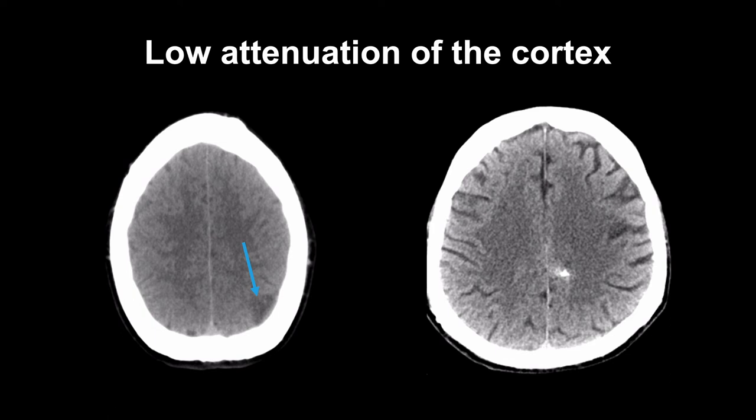But once you know that the patient had symptoms of right-hand weakness, you're more likely to find it. The low attenuation evident in the cortex in this patient proved to be reproducible on multiplanar reconstruction and lies within the left precentral gyrus, precisely where hand motor function resides.